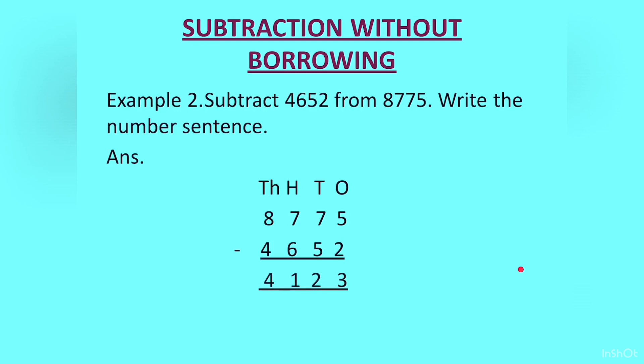So our answer will become 4123. Now again we have to write the number sentence here. So it will be 8775 minus 4652 is equal to 4123.